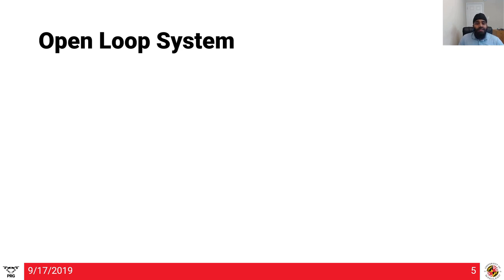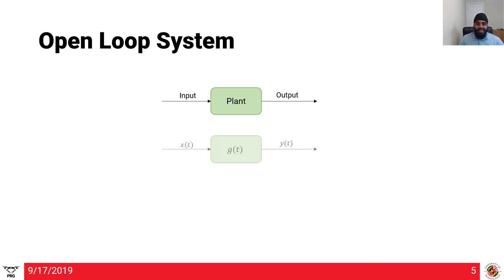Let's talk about the open-loop system. Consider a simple system where we have an input which gives us a certain output response — a system of stimulus, plant, and response. These plants could be anything from as simple as a thermostat to control an air conditioner, or something complex like a humanoid robot or a quadrotor. Mathematically, the input is x(t), the plant has some response g(t), and it gives an output y(t), where t is time. The capital X, G, and Y representations are functions of s — this is how we represent these functions in the Laplacian or frequency domain.